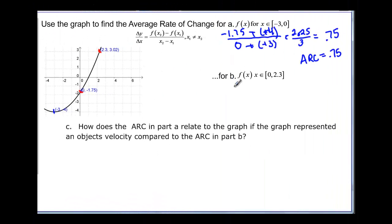So now we need to do part b. We're going from 0 to 2.3, so again that's 0 over here to 2.3. So we start with the 2.3 y value, .02, minus the 0 value, which is negative 1.75, so that will be plus 1.75. And then on the bottom, we have the 2.3 minus 0, and 3.02 plus 1.75 ends up being 4.77. You can try it out with your calculator to double check, and 2.3 minus 0 is just going to be 2.3, and if we divide those two, we're going to end up with 2.07, and that is our average rate of change between those two points.